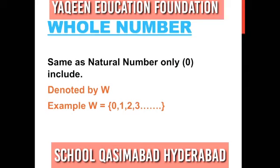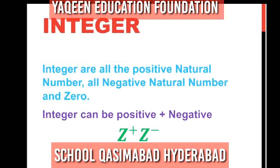Next is whole numbers. What is the whole number? It is the same as natural numbers, only zero is added. Whole numbers are denoted by W. W is equal to 0, 1, 2, 3 and so on.